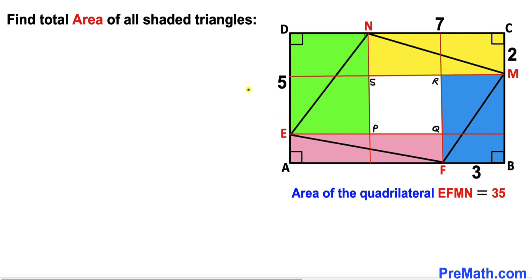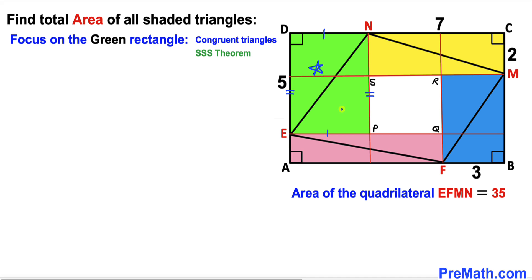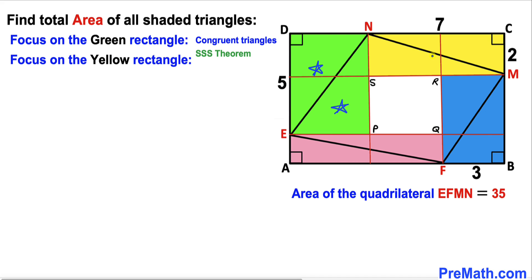Now let's focus on the green rectangle. We can see that opposite sides are equal in length, and EN is a diagonal. So therefore these two triangles are going to be congruent according to the side-side-side theorem, meaning the area of one triangle is equal to the area of the other.